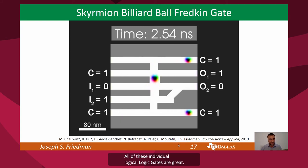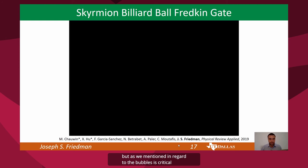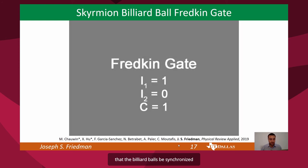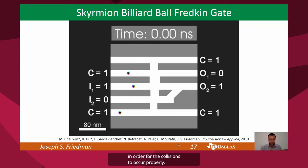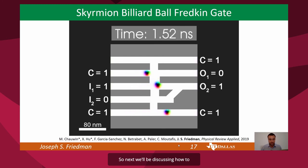All of these individual logic gates are great, but, as we mentioned in regards to the bubbles, it is critical that the billiard balls be synchronized in order for the collisions to occur properly. Next, we will be discussing how to synchronize these magnetic skyrmions.